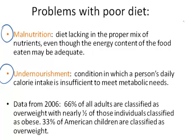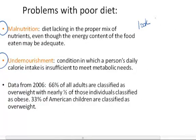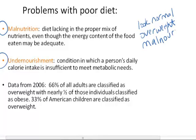A person who is malnourished might look normal — they don't look like they're starving. They could even look overweight or be of normal weight, but that person may still be considered malnourished because the diet is not providing all the necessary nutrients to keep the organism healthy. This can lead to all kinds of health issues. That's the term malnutrition — it's improper nutrition.